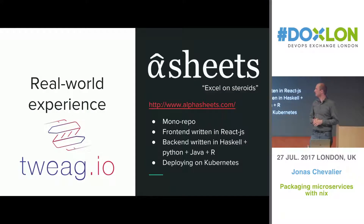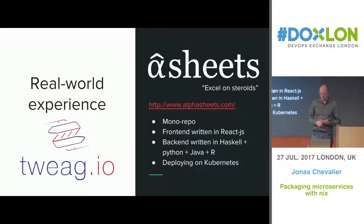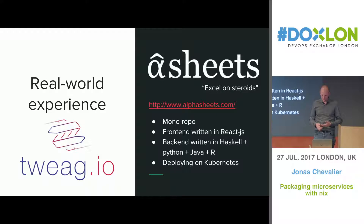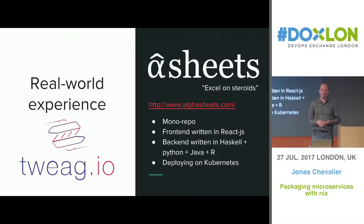So I found a couple of customers. One of the bigger ones is AlphaSheets. They are a San Francisco startup, and they're building Excel on storage, which basically allows you to run arbitrary code in Excel sheets on the web. The problem they had is they wanted to package all of this — they have R, Python, lots of backend stuff — and in the end, deploying on Kubernetes. So the talk is about how you can use Nix as a replacement for Dockerfiles.